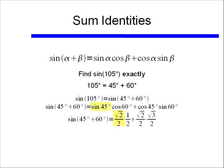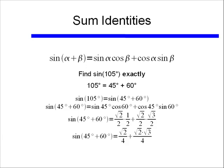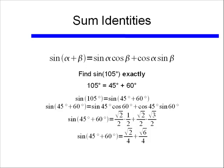The sine of 45 degrees is the square root of 2 over 2. Likewise, cosine of 60 degrees is 1 half, cosine of 45 degrees is also square root of 2 over 2, and sine of 60 degrees is square root of 3 over 2. We know this from our unit circle and from the material we did in the first part of this class. Doing the multiplication, we get square root of 2 over 4, plus square root of 2 times square root of 3 all over 4, which gives us square root of 6. Combining the fractions, the final answer for sine of 105 degrees exactly is square root of 2 plus square root of 6, all over 4.